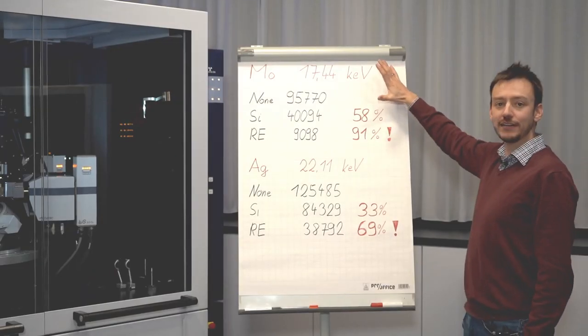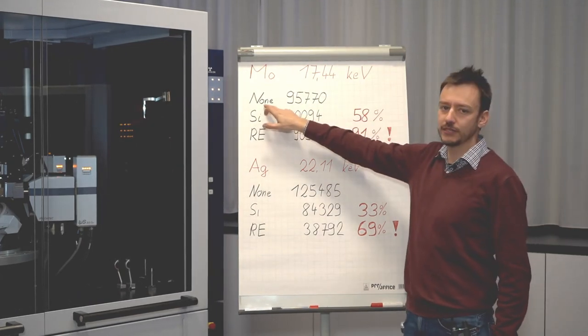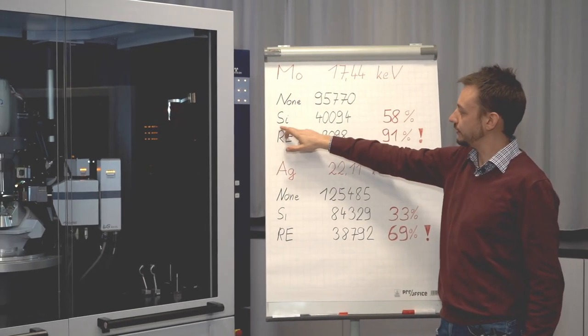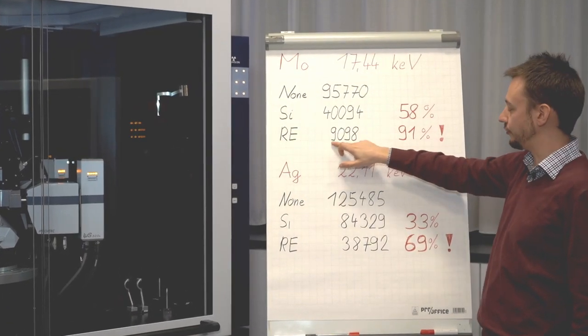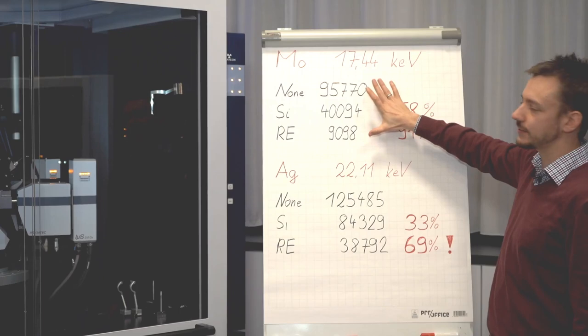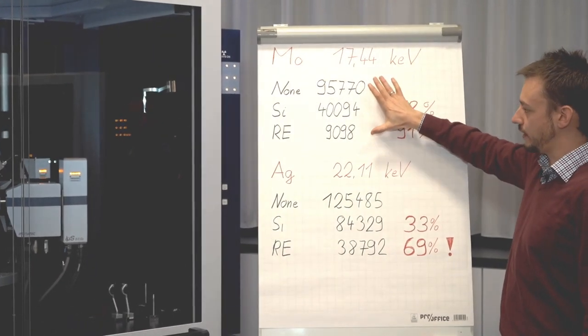So here we summarize the outcome of our experiment. This is without anything in front of the detector. That is with the silicon chip in front of the detector and that's with the rare earth x-ray converter in front of the detector. And these are the intensities recorded by our detector.